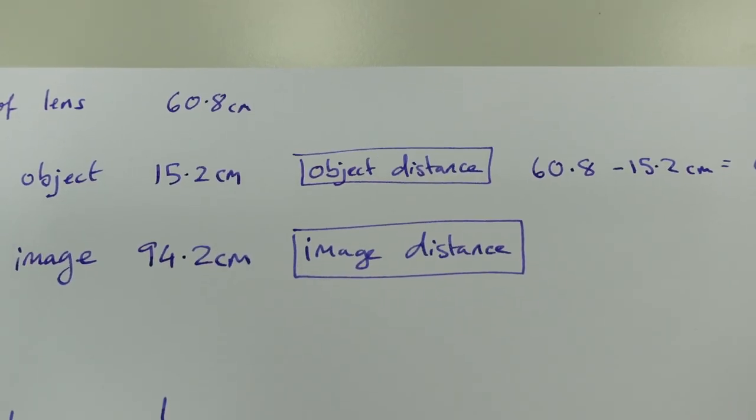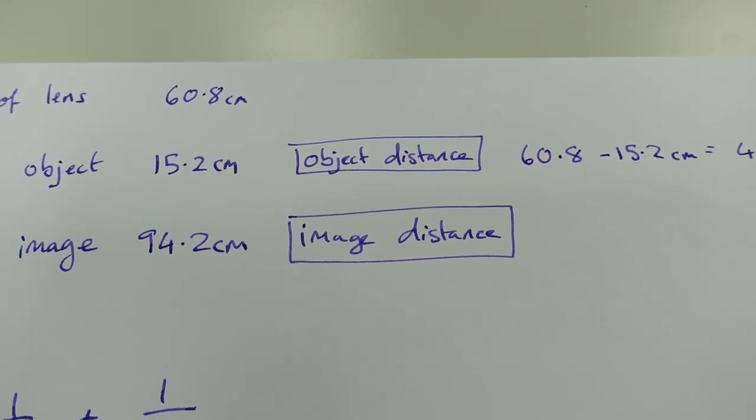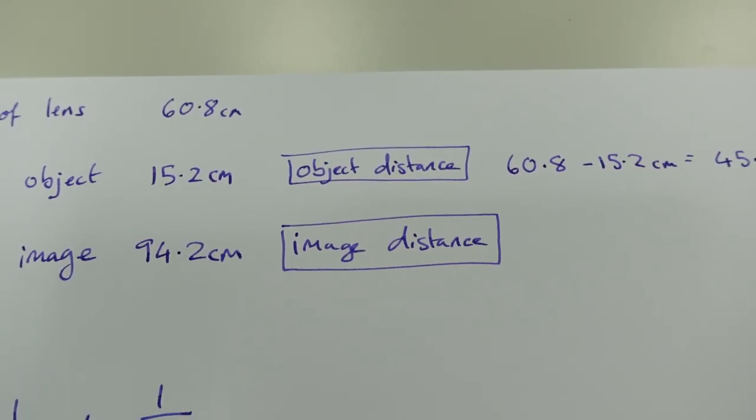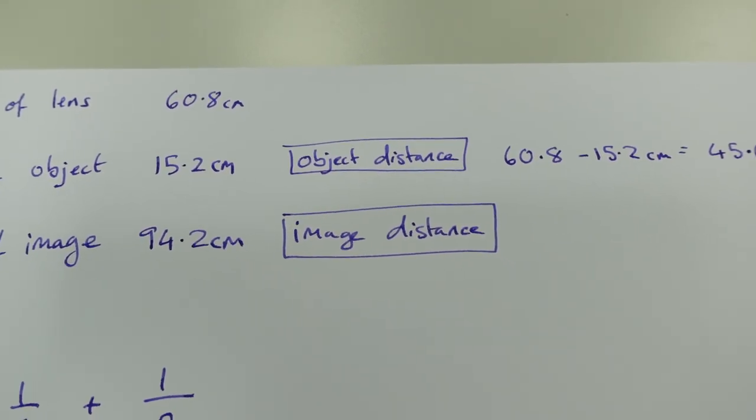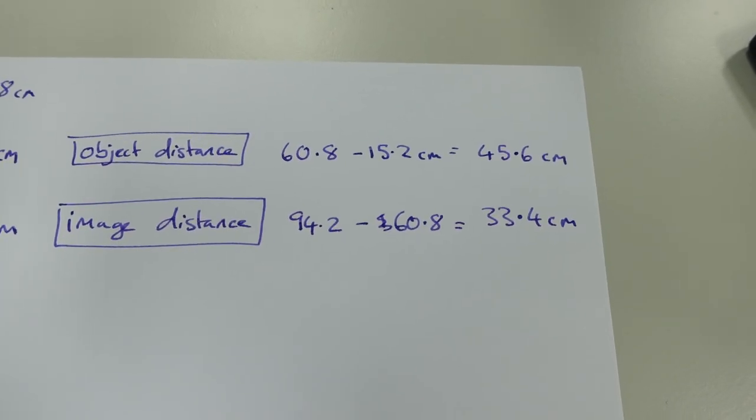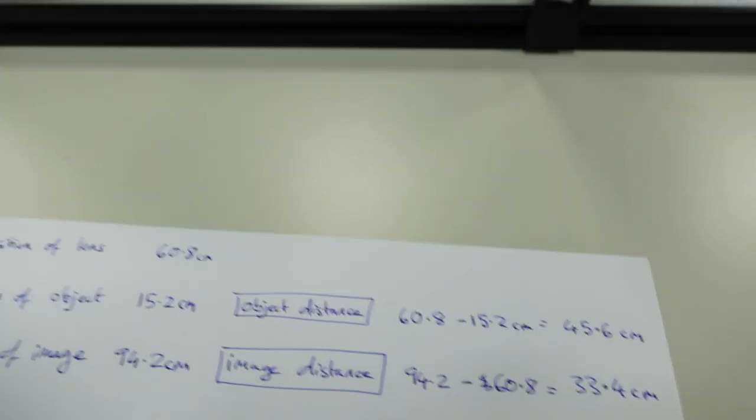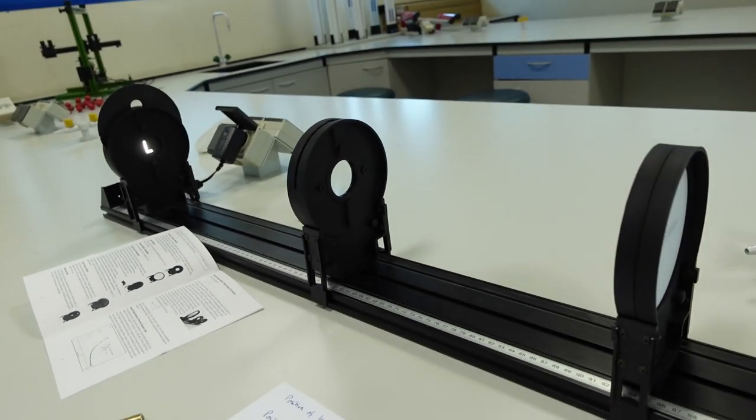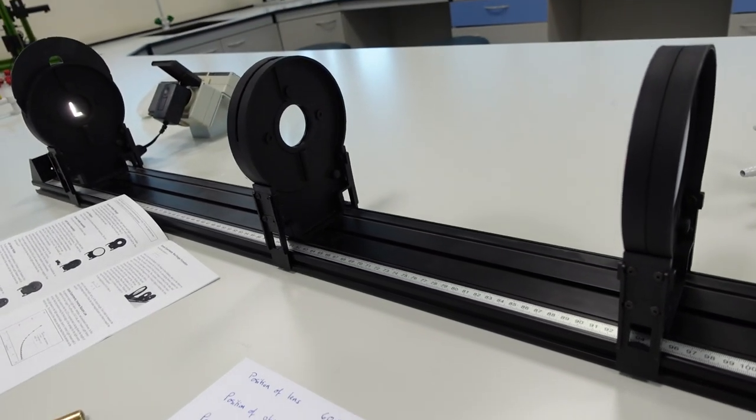In order to work out image distance, we actually do it the other way. We do 94.2 cm. That's where the screen is. Minus 60.8 cm. That's where the position of the lens is. So that gives us 94.2 minus 60.8. It's 33.4 cm. And bear in mind, we're measuring all distances from the actual lens itself.